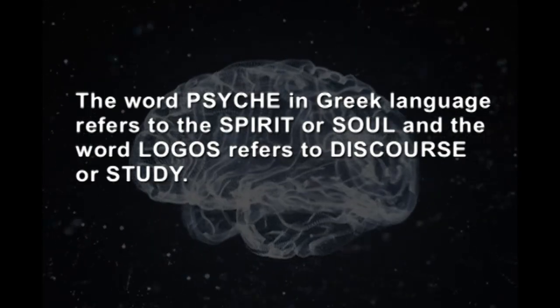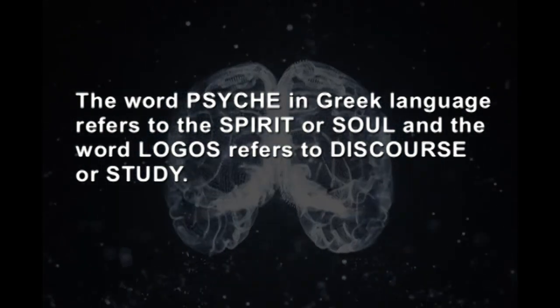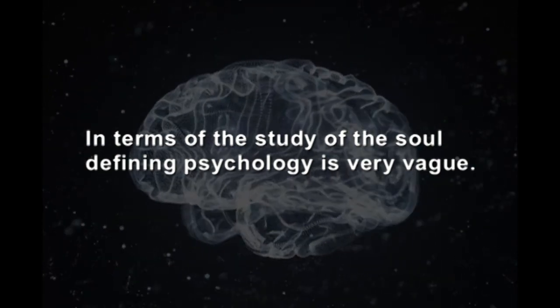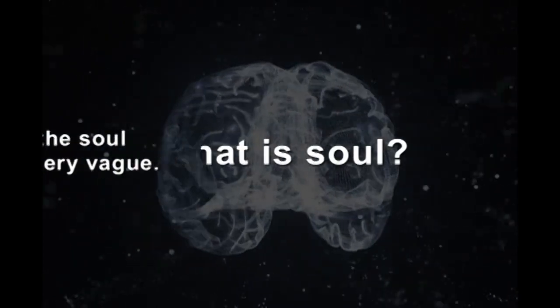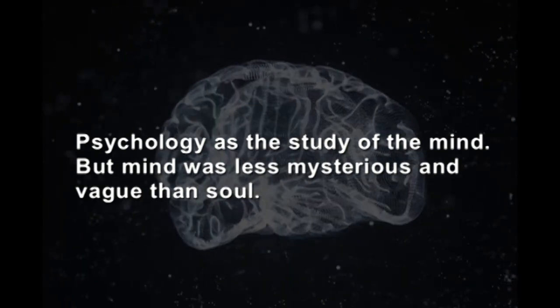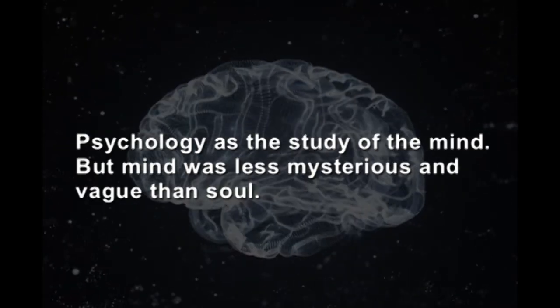The word 'psychology' has its origin in two Greek words: 'psyche' and 'logos.' The word 'psyche' in Greek refers to the spirit or soul, and the word 'logos' refers to disclosure or study. During earlier times it was considered a discipline dealing with the study of the soul. However, defining psychology in terms of the soul is very vague — what is soul, can we see it, can we measure it? Greek philosophers were unable to explain this, so this definition was rejected. Psychology as a study of mind was then proposed, as mind was less mysterious than soul.